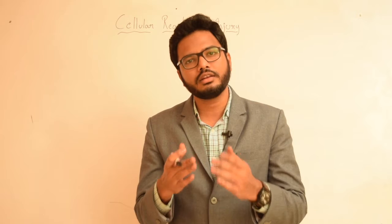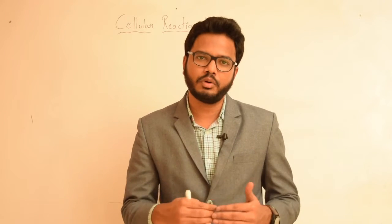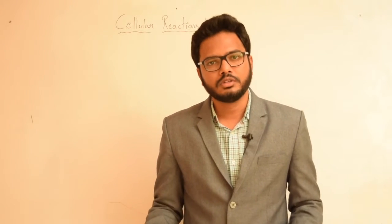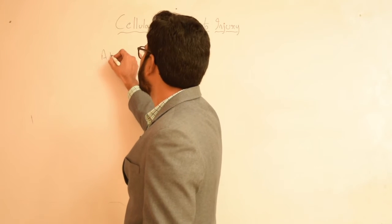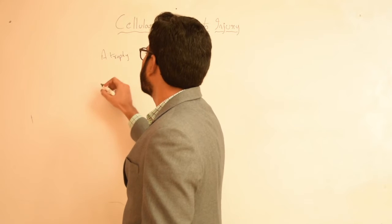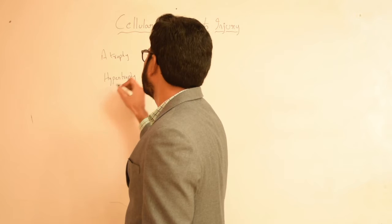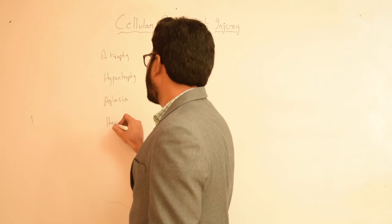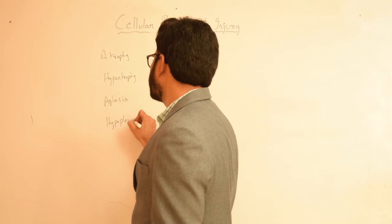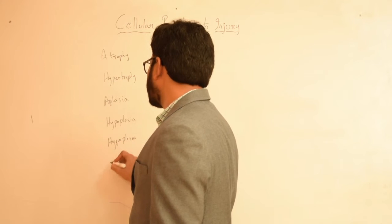In this video, let's discuss various cellular reactions to injury. Depending upon the nature of injury — whether it's reversible or irreversible — cells respond as a form of adaptive mechanism. The various cellular reactions to injury are: atrophy, hypertrophy, aplasia, hypoplasia, hyperplasia, and metaplasia.